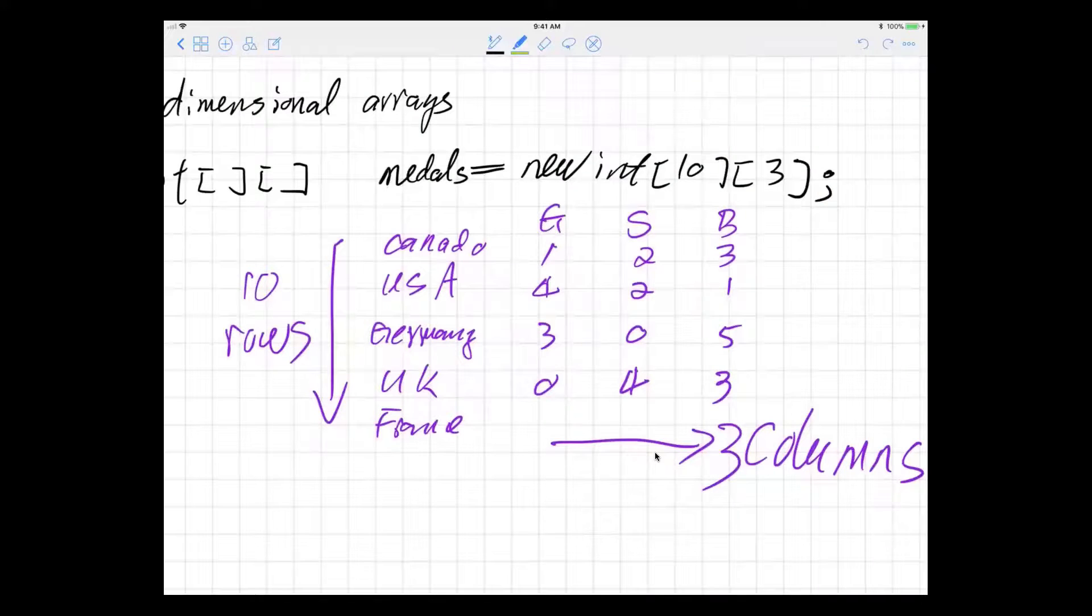We then declare new int, so let's say we have ten countries and three columns of medals: gold, silver, and bronze.